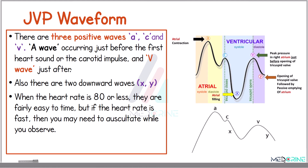A jugular venous pressure waveform comprises three positive waves — the A, C, and V waves — and two descents, called the X and Y. The A wave occurs just before the first heart sound or the carotid pulse, and the V wave occurs just after that.